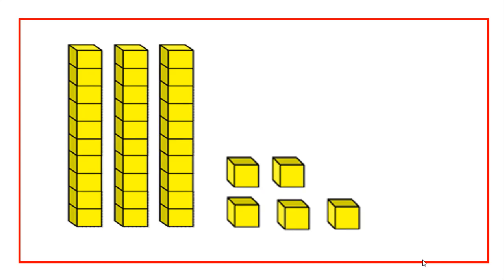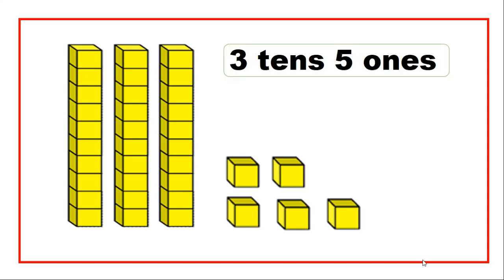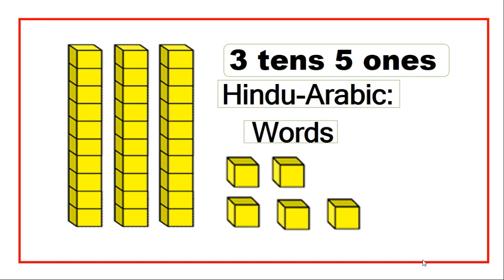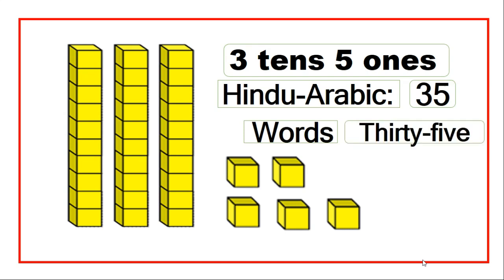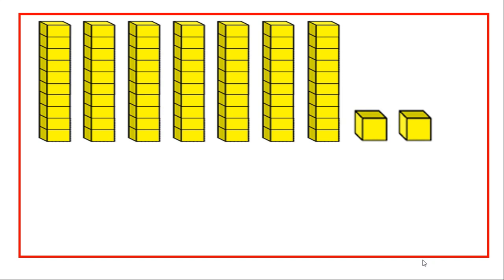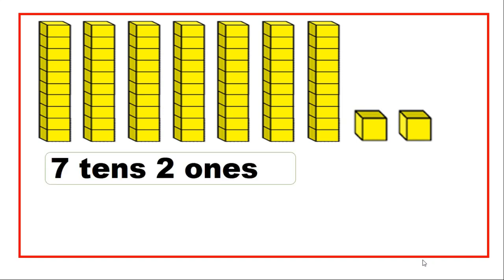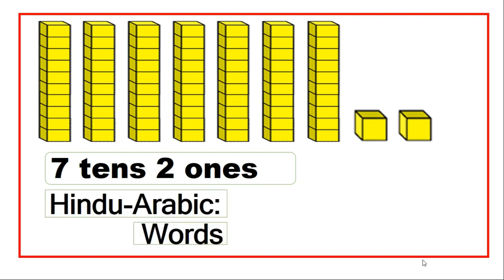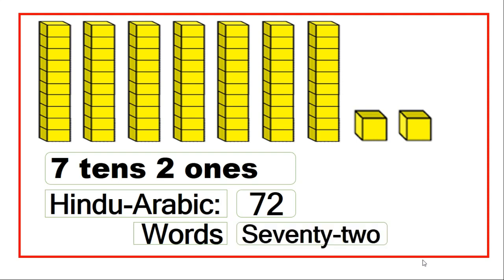Here we have three blocks of tens and five blocks of ones. So we have three tens and five ones. In Hindu Arabic, we write this as three, five. And in words, this will be thirty-five. Now we have seven blocks of tens and two blocks of ones, so we have seventy-two in words, and in Hindu Arabic, we write this as seven, two.